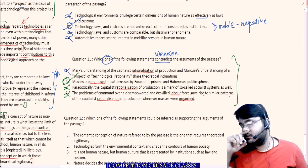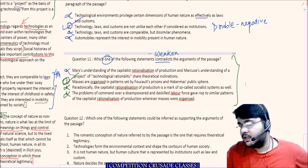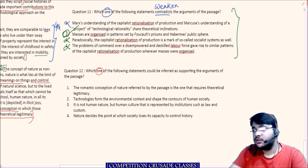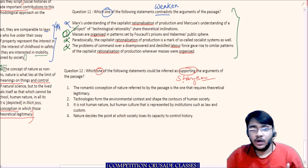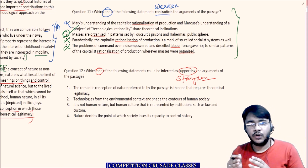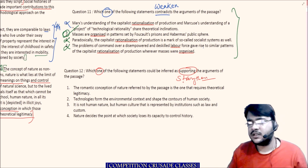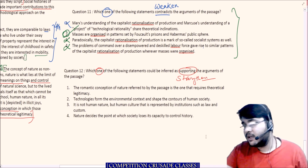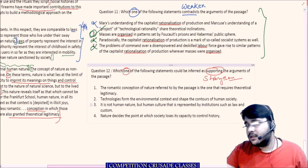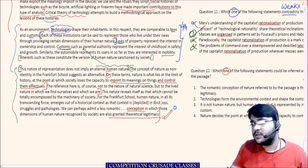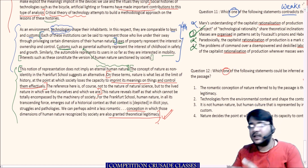Question 4 — 'Which one of the following statements could be inferred as supporting the arguments of the passage?' In other words, which one strengthens? Three options will weaken; one will strengthen. Option A: 'The romantic conception of nature referred to by the passage is one that requires theoretical legitimacy.' The passage says those dimensions of human nature recognized by society are granted theoretical legitimacy — they are already granted, not requiring it. So this is the opposite — goes out.